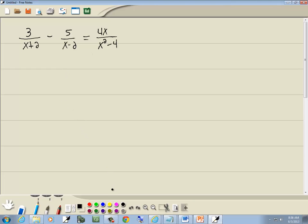Now our first step is to get rid of parentheses. We don't have any. Second step is to get rid of fractions. In order to get rid of the fractions, we have to factor all of our denominators.